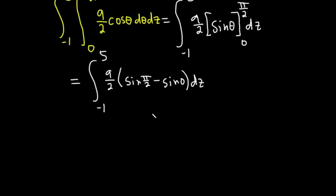This is equal to the integral from negative 1 to 5. We have the 9 halves here. And then the sine of pi over 2 is 1. Just think about the unit circle. On the unit circle, every ordered pair is of the form cosine theta, sine theta. So at pi over 2, the y coordinate is 1.